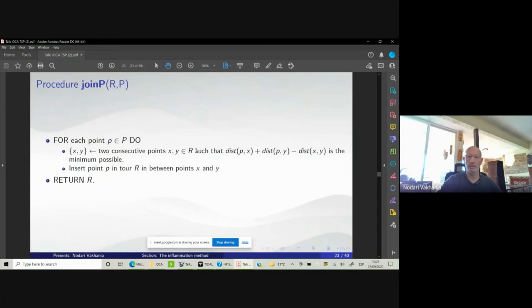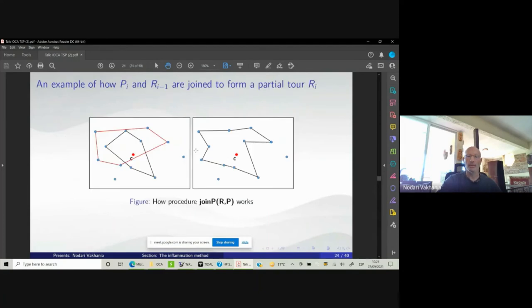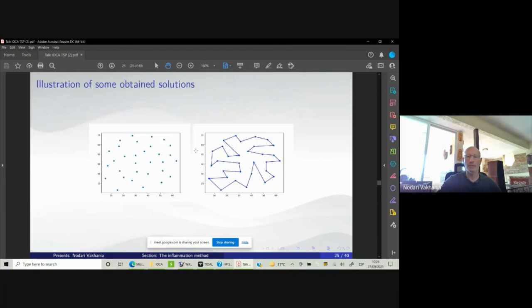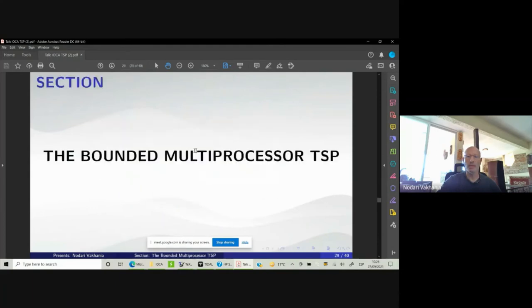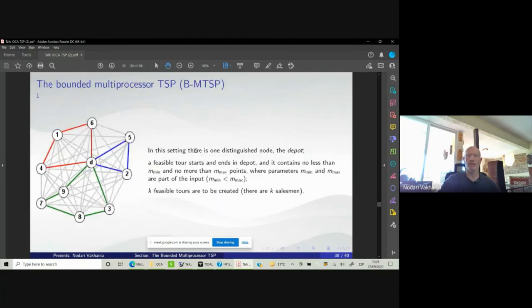That results, now we have a new tour of iteration i that includes all these points which are on p and which belong to r. Here is an example illustrating this procedure. Here are some results. Now we turn to the bounded multiprocessor version of TSP.